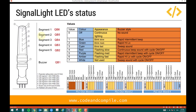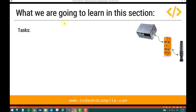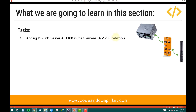So to summarize, every segment has a byte which we can control using a PLC — that's how we control the LED status. Now let's look at what we are going to learn in this section. I have defined various tasks we will follow through the videos. Task 1 is adding the IO-Link Master in the Siemens network — we have already done this in the RFID section, so we'll go through it quickly here.